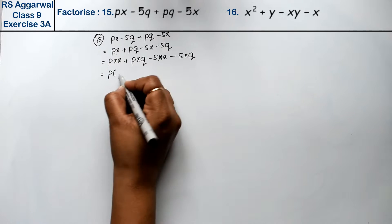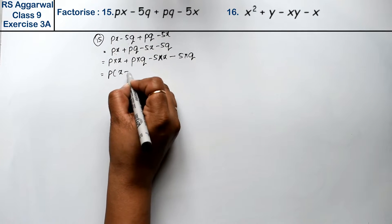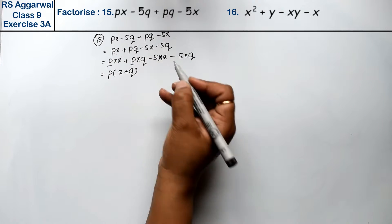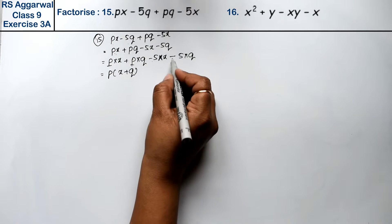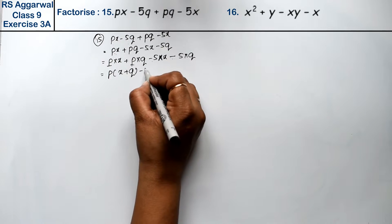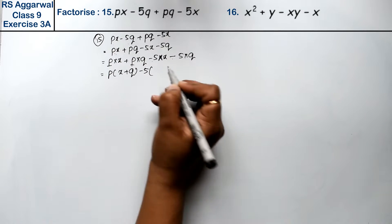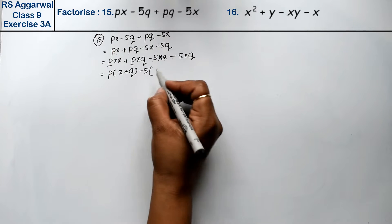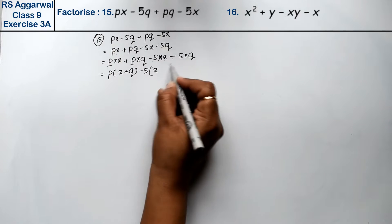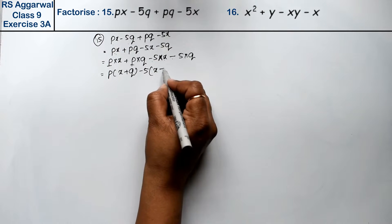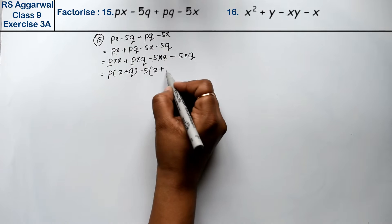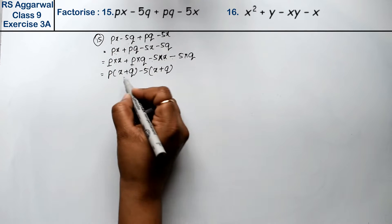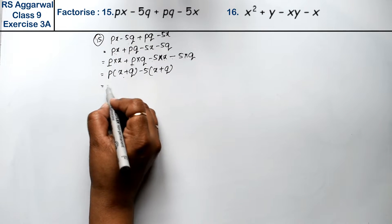If p is common, then what happens? We get x plus q, with p common. Now minus is common and 5 is common. If we take minus 5 common, we change the sign inside. x will change the other side, so when it was minus, it becomes plus. Then q will change the other side. This gives us the same factor x plus q.